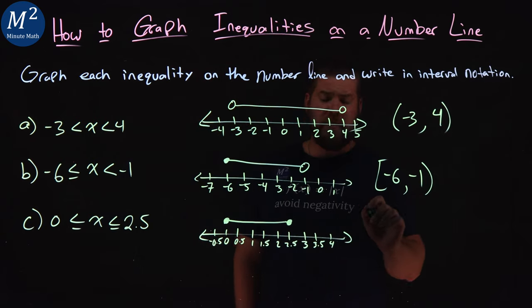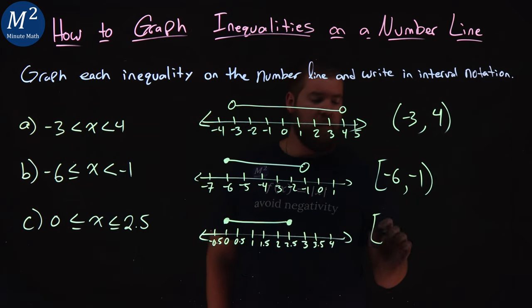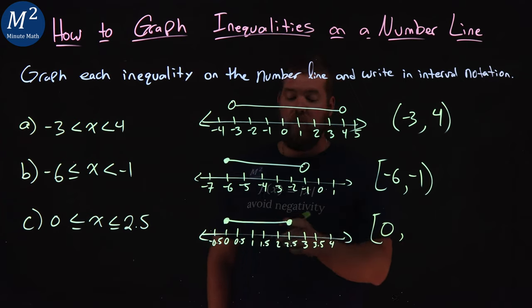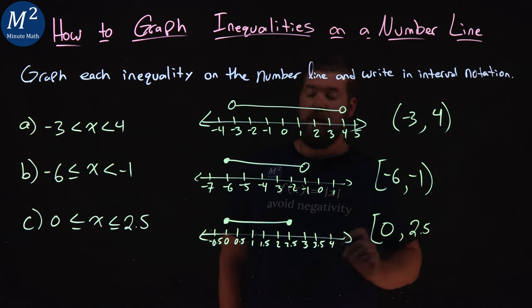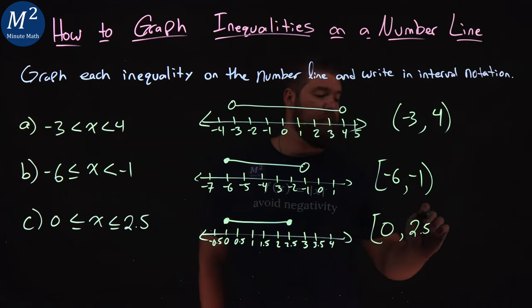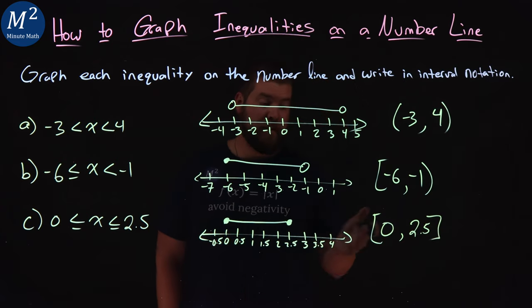Now let's write an interval notation. Since x can equal 0, we put a bracket there for 0, comma. Then we go up to 2.5. And again, x can equal 2.5, and we have another bracket. And there's our answer here.